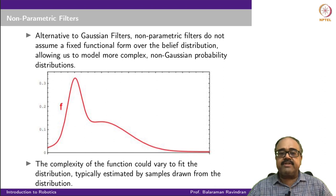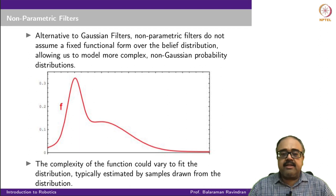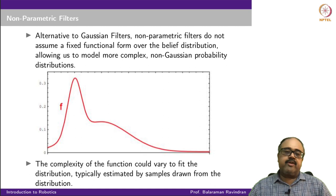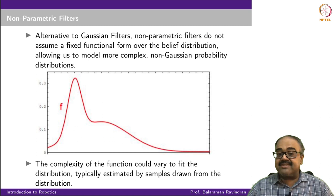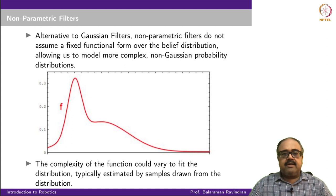Depending on the kind of samples we draw from the distribution, we increase or decrease the number of parameters used for describing the function itself. So even though we call it non-parametric, it does not mean there are no parameters — it just means there is not a fixed set of parameters. This allows us to represent complex and arbitrary distributions, not restricted to Gaussian distributions.